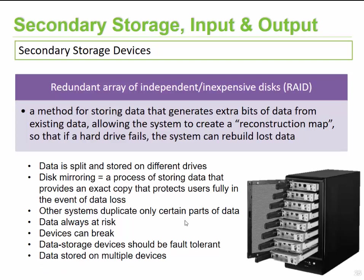The next set of devices are known as RAID — Redundant Array of Independent Inexpensive Disks. This is a method that allows you to store information across multiple disks. For example, a unit might have eight disks, saving information across any one or multiple disks in such a way that if one drive fails, it can rebuild all the lost data so you don't lose your information.